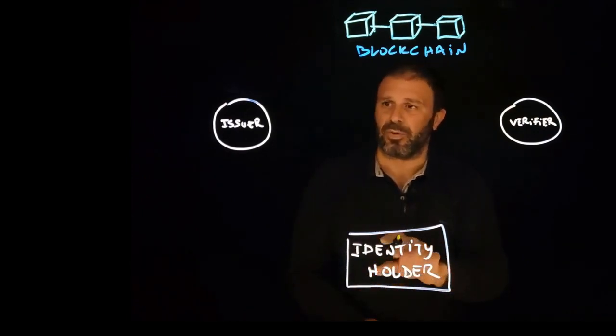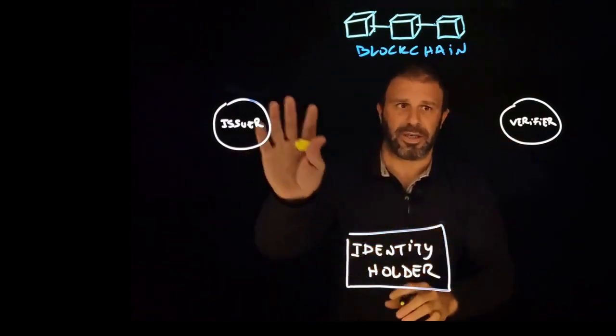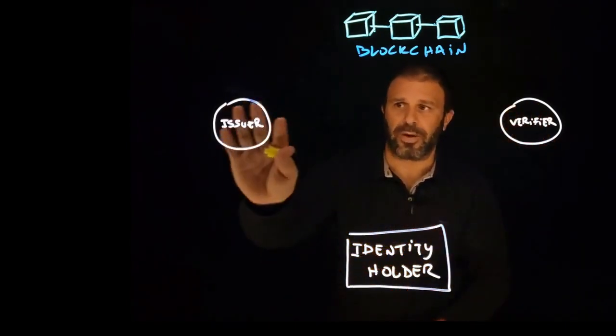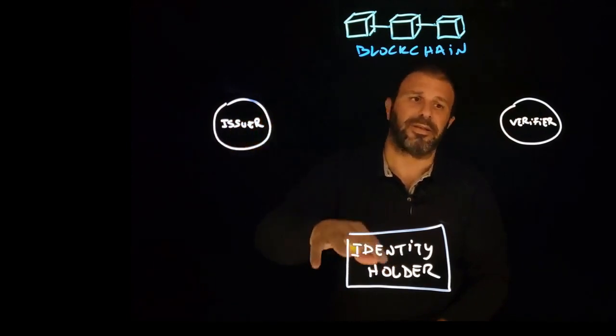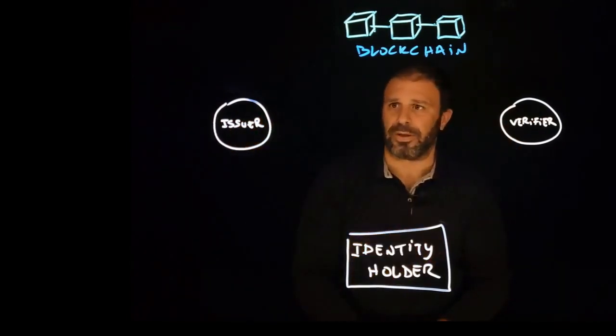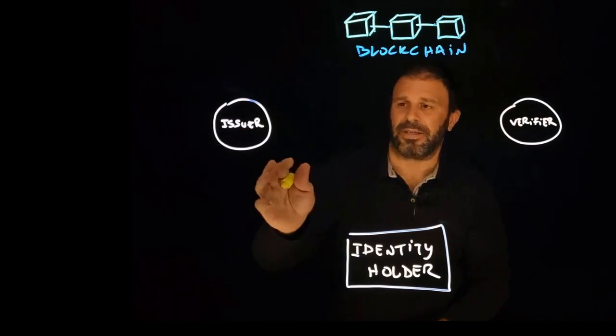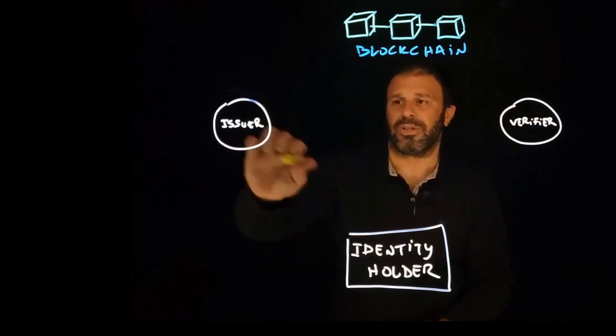Self-sovereign identity systems work with three parties: the issuer, the verifier, and the identity holder. The issuer basically sends credentials to the identity holder that the identity holder can then share with third parties. But there is no dependencies between these three actors.